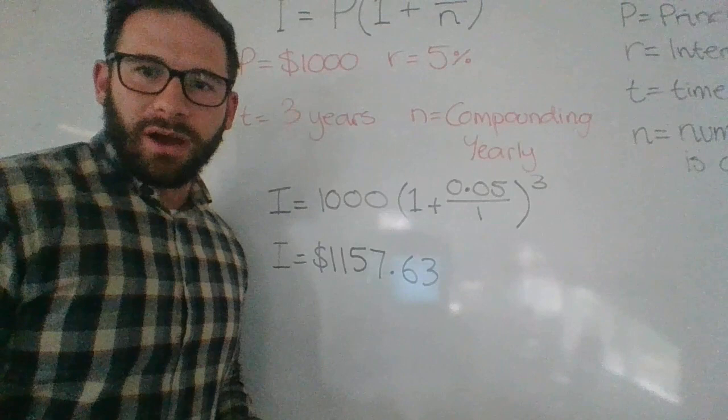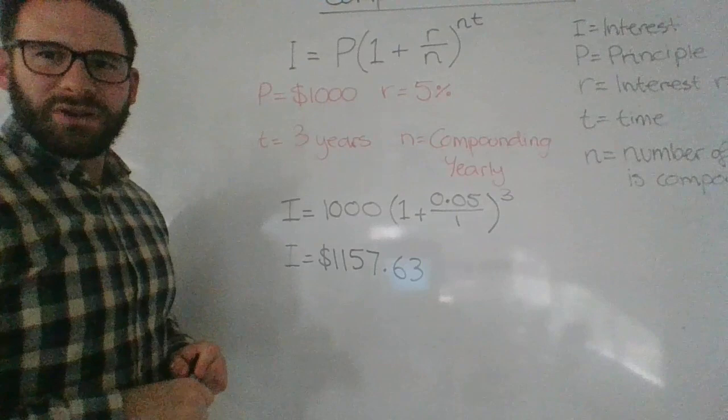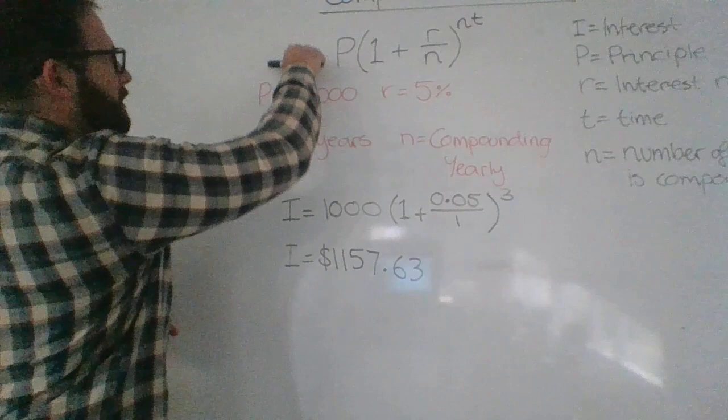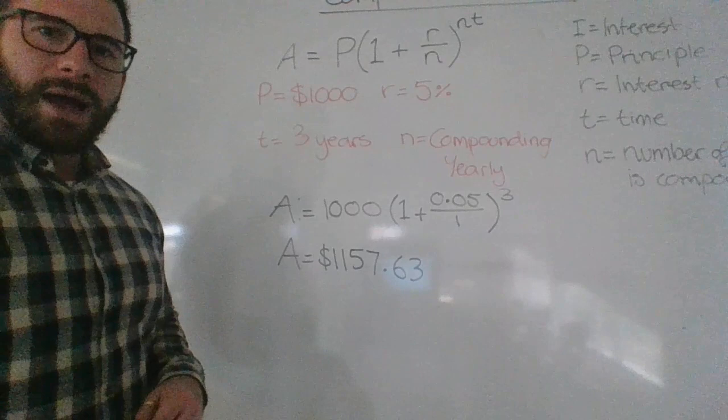The other way that this can actually be written, instead of having I as the interest, because this value isn't actually my interest value, it's the amount that I end up with. It can also be represented as A, the amount that I actually end up with, so you'll also see it written like that. It's probably a more accurate way to put it, but for the time being, I hope that helps you out a little bit. That is basically compound interest.